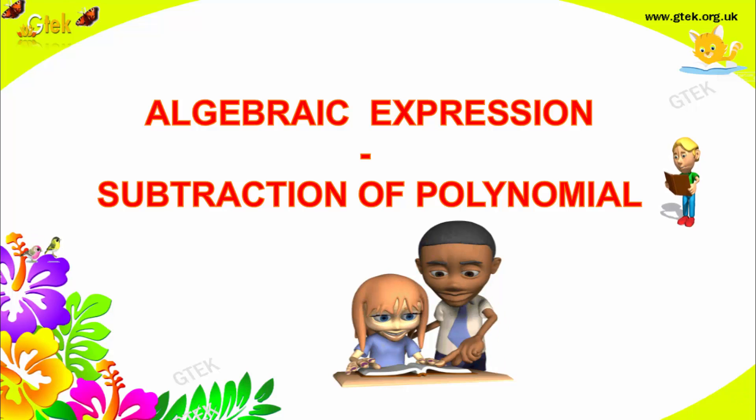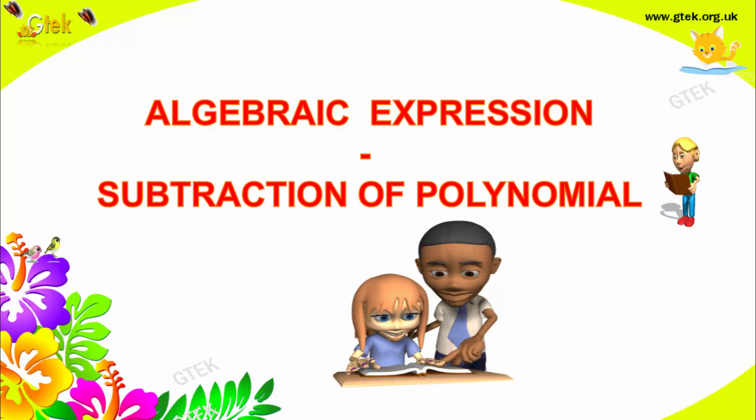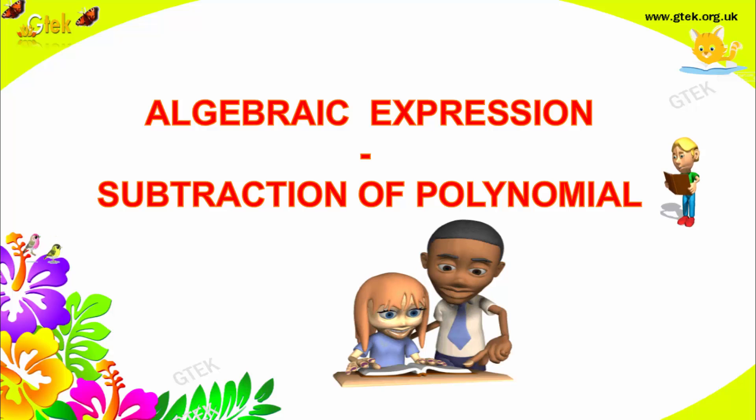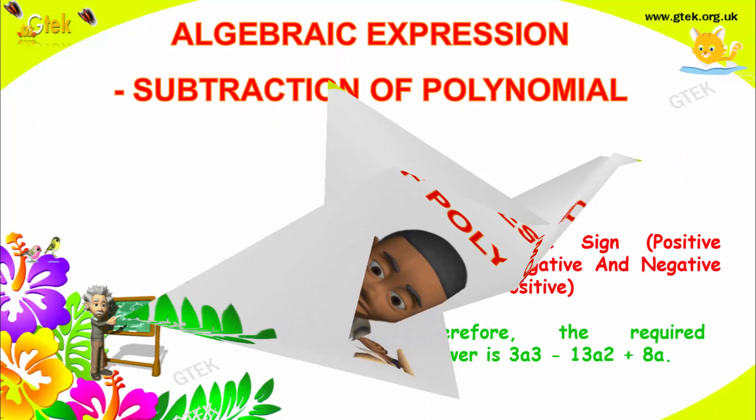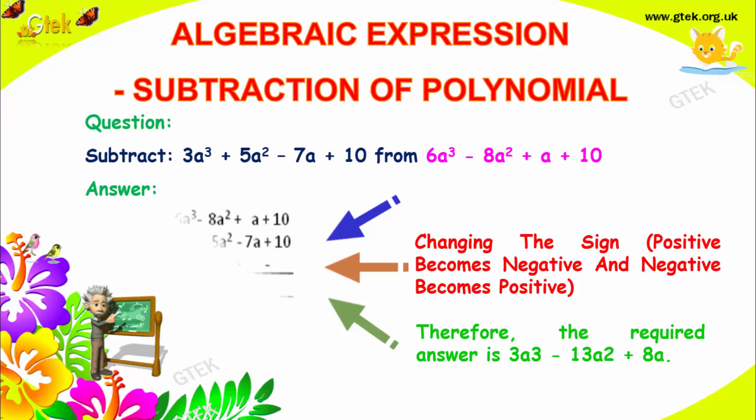Now, we are looking into algebraic expression and subtraction of polynomial. The question is 3a cube plus 5a square minus 7a plus 10, and this needs to be subtracted from 6a cube minus 8a square plus a plus 10.